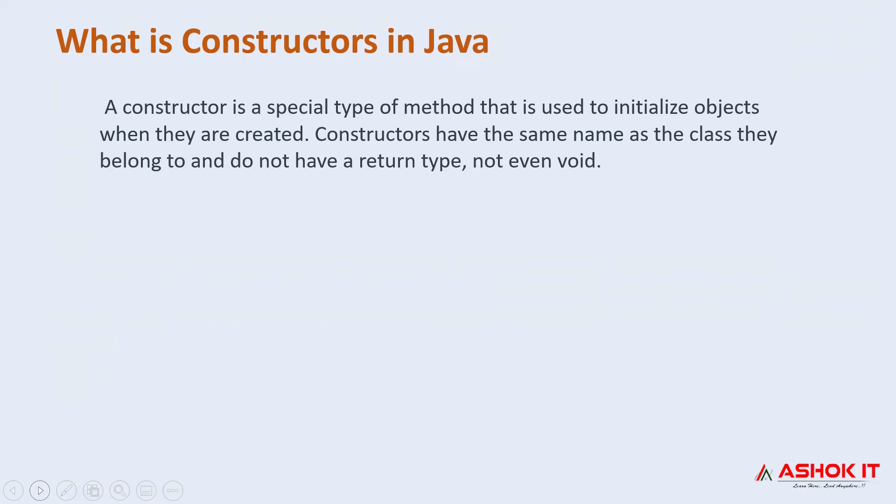Each class in Java has a constructor. Even if we don't create one, Java explicitly calls a constructor with all the data member values set to zero, which is called the default constructor.